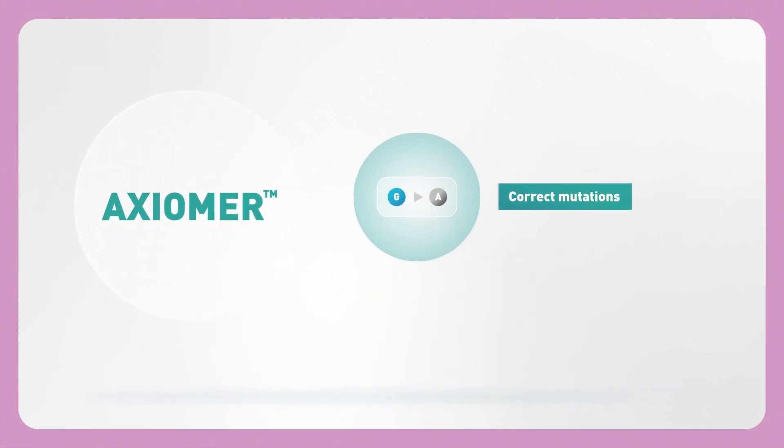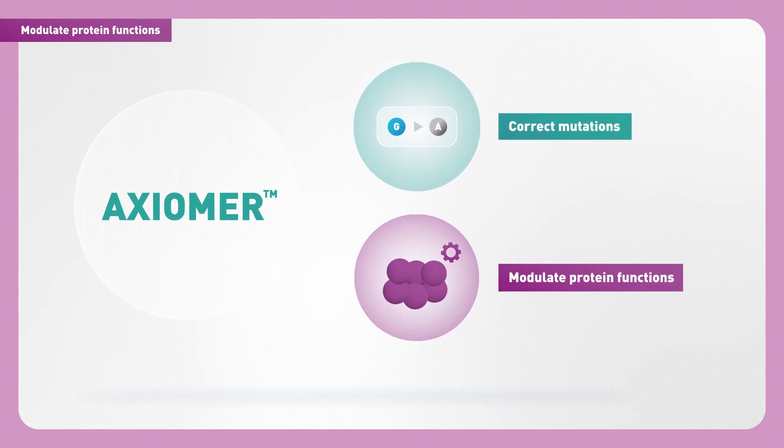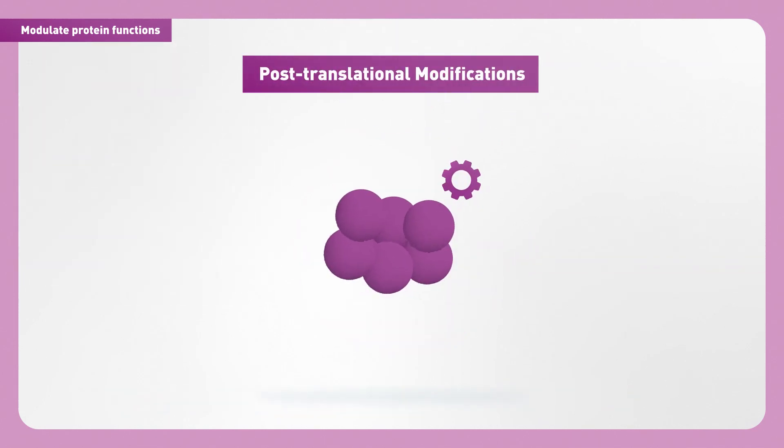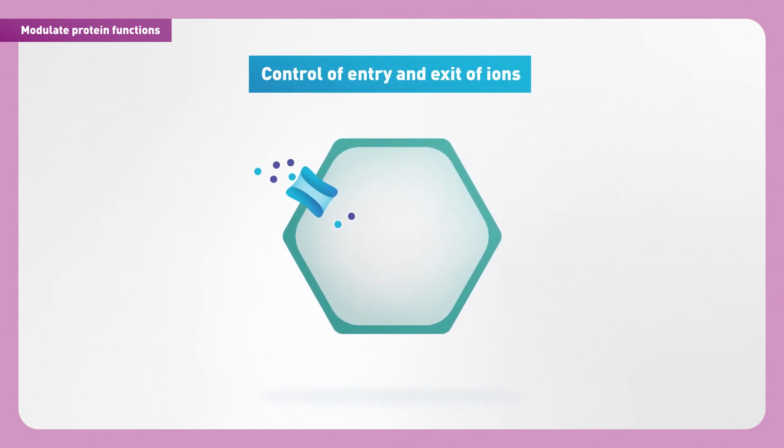Another way of using Axiomer is to take advantage of its ability to modulate protein functions. After they are produced, proteins go through additional modifications that affect their function. Channel proteins are an example of this. Channels control the entry and exit of ions in the cells. The amount and type of ions in a cell are critical for determining its activities.